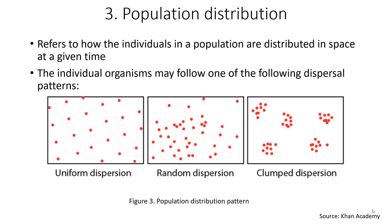Second, random dispersion: individuals are distributed randomly without a predictable pattern. An example comes from dandelions and other plants with wind-dispersed seeds, which spread widely and sprout where they happen to fall as long as the environment has enough soil, water, nutrition, and light. Third, clumped dispersion: individuals are clustered in groups — for example, plants that drop their seeds straight to the ground such as oak trees, or animals that live in groups such as schools of fish or herds of elephants. Clumped dispersions also occur in patchy habitats where only some patches are suitable to live in.